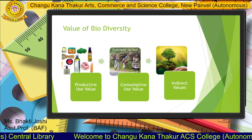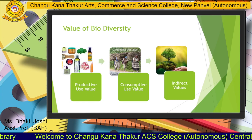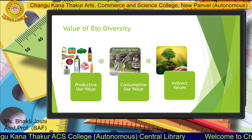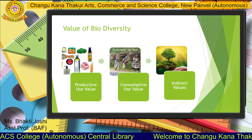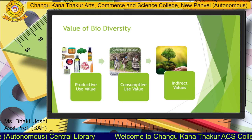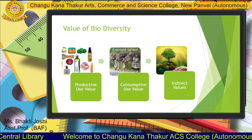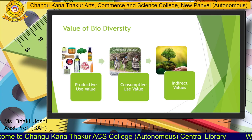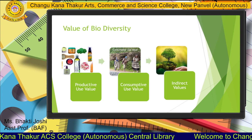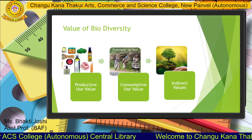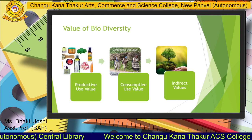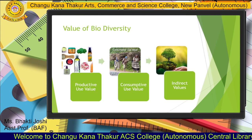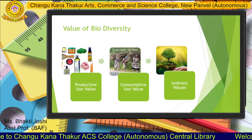The values of biodiversity are the benefits we get from nature's different types of biodiversity. The first is productive use value. As the name suggests, it includes products harvested or sold in the market — such as fuelwood, timber, fish, animal skin, fodder, fruits, cereals, and medicinal plants. These are examples of productive use value of biodiversity.